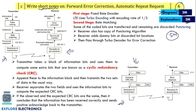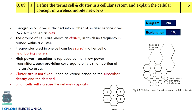Define the terms cell and cluster in a cellular system and explain the cellular concept in wireless mobile networks. A cell is a small service area of approximately 5 to 20 kilometers. A group of cells is considered a cluster, and frequencies used in one cell can be reused in other clusters. Provide diagrams showing what a cluster looks like and how the cellular concept works by dividing coverage into smaller cells.